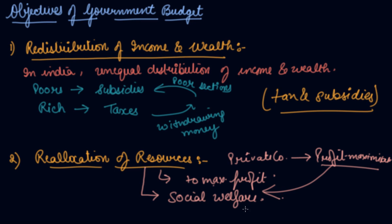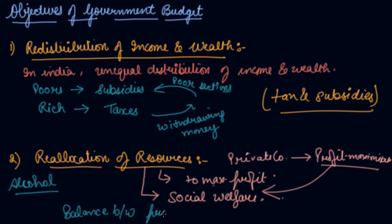The private enterprise will always decide to allocate resources to those areas of production where profits are high. It is possible that such areas may not promote social welfare — for example, alcohol. Alcohol production gives higher profit but it is not socially accepted and not for social welfare. So through its budgetary policy, the government directs the allocation of resources to maintain a balance between profit maximization and social welfare.